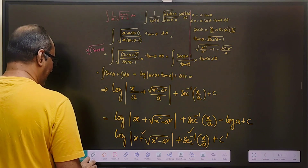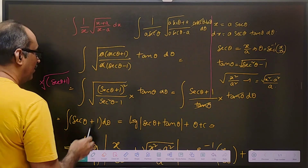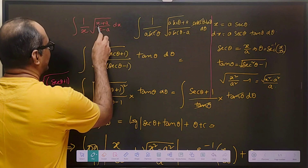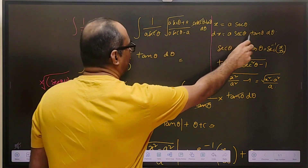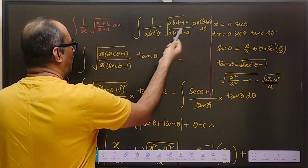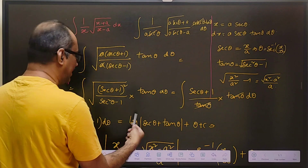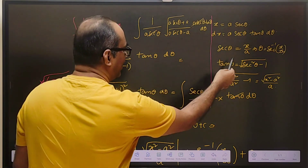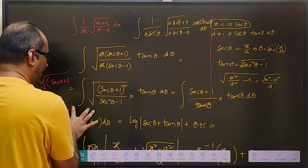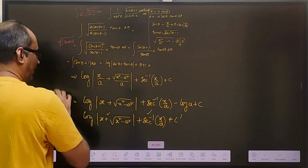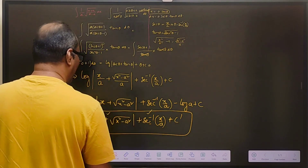Let us have a simple recap of what we have done. We were asked to find the integral of 1 by x, square root of (x plus a) by (x minus a). We took x equals to a secant theta, so dx equals a secant theta tan theta d theta. After substituting, we found we are simply left with the integral of (secant theta plus 1). The integral of secant theta is log(secant theta plus tan theta), and the integral of 1 is theta. Since we started with x equals a secant theta, we can express secant theta, tan theta, and theta back in terms of x. Finally, our answer is log of (x plus root of (x squared minus a squared)) plus secant inverse (x by a) plus c.